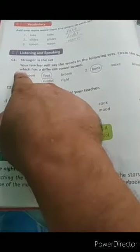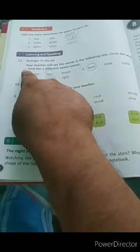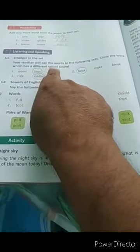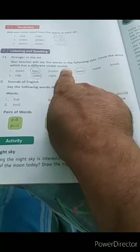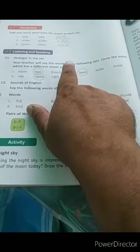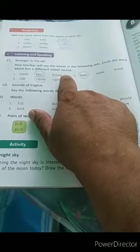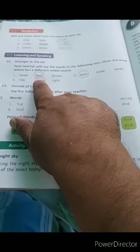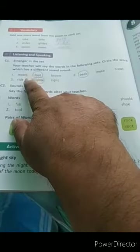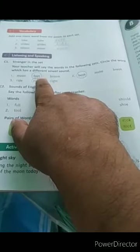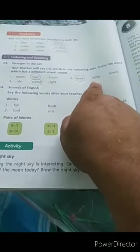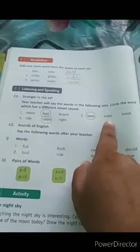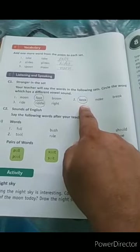And then see here C1 is listening and speaking. Stranger in the set, which is different. We have to circle the words in the following sets, circle the words which has a different vowel sound. First you say moon, foot, and broom. Each sound is one sound and foot has different vowel sound, foot circle. Second is beak, make, break. Make and break are both one sound. When it's beak, beak is a different sound, we will circle it.